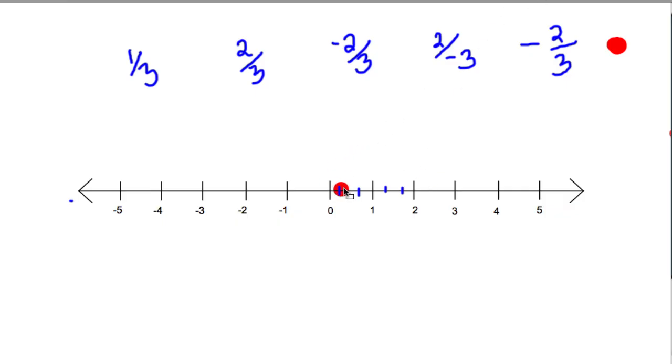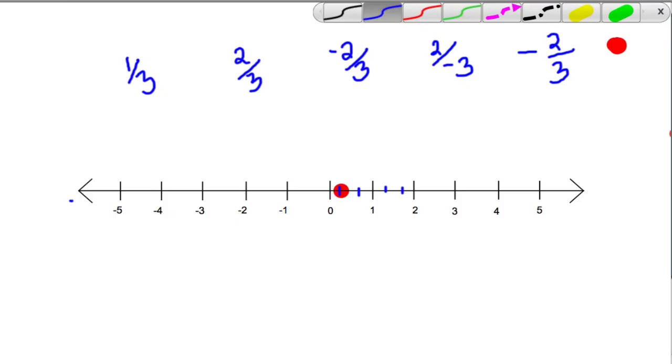So 1 third would be the first third right here. It's an estimation. What we're looking for is that you're not placing the 1 third above the half. It should be below the half. So then we label it as 1 third, and 2 thirds would go, not where the first third is, but where the second third is.